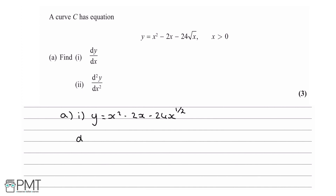To find dy by dx, for any term where y equals ax to the n, dy by dx equals anx to the n minus 1. So dy by dx equals 2x minus 2 minus 12x to the minus half.